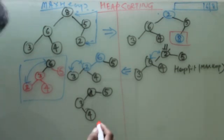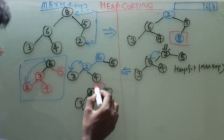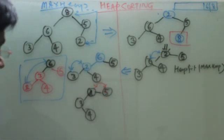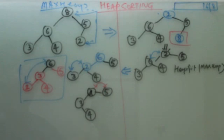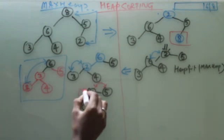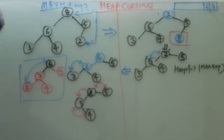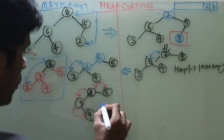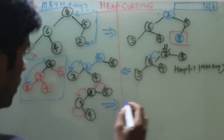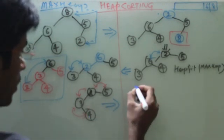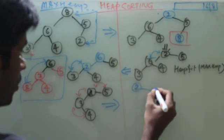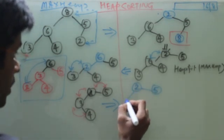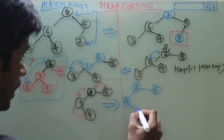Now what I will do, I will try to heapify it. So let's arrange the position. If I try to heapify this, 5 is greater than 2. So it becomes 5, 2, 4, and 3.